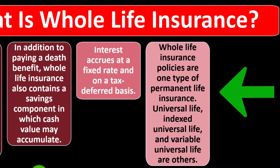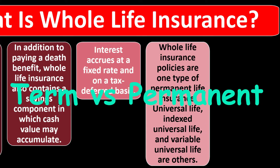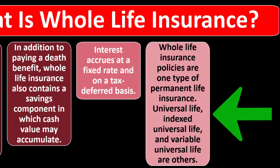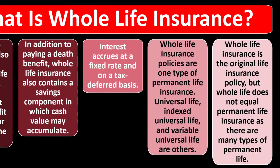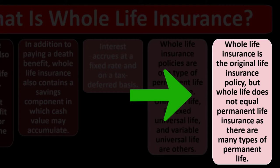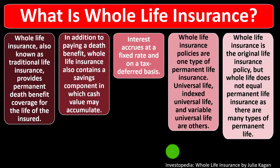Whole life insurance policies are one type of permanent life insurance. The major categories are term versus permanent — and we're on the permanent life insurance side. Universal life, indexed universal life, and variable universal life are others. Whole life insurance is the original life insurance policy, but whole life does not equal permanent life insurance, as there are many types of permanent life.